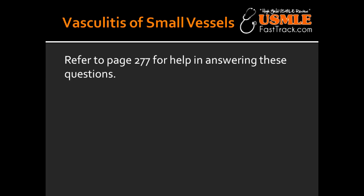Henoch-Schönlein purpura is a vasculitis that occurs secondary to IgA complex deposition. It is also associated with IgA nephropathy.